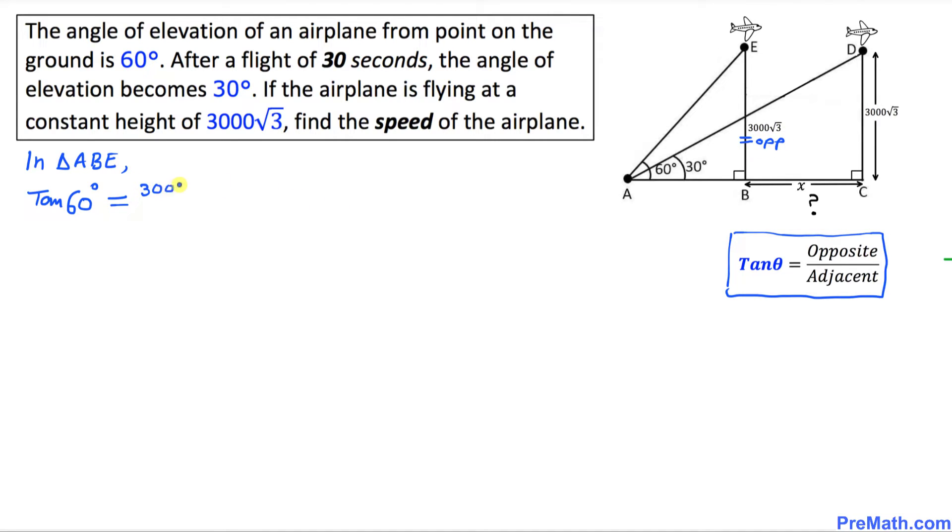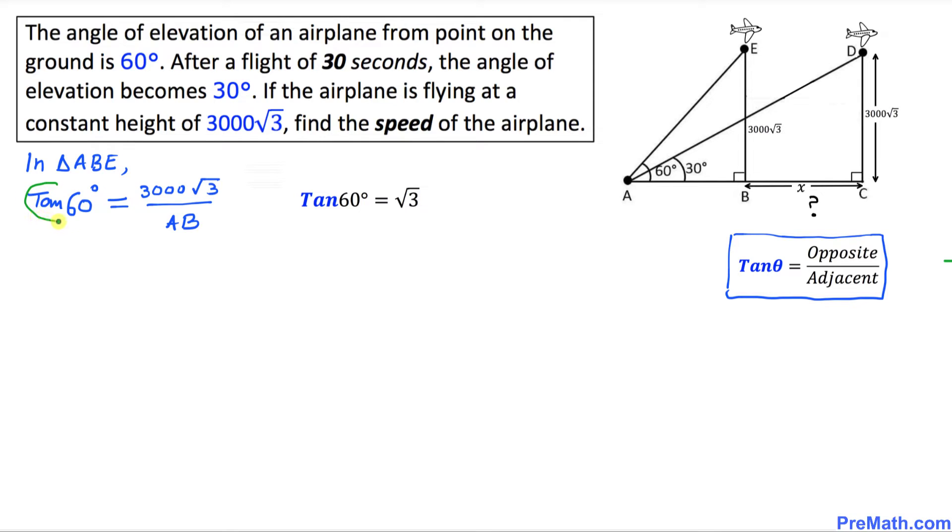This is our opposite side which is 3000√3 divided by adjacent. In our case, our adjacent is AB. We know that tan(60°) is simply √3, so I can write this as √3 = 3000√3/AB.